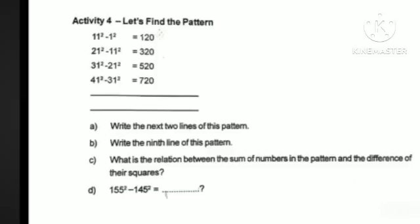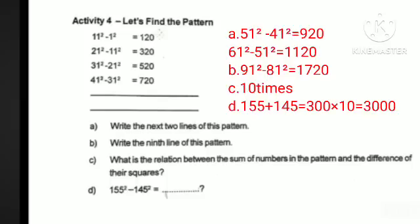Are you ready? Now write the next two lines of this pattern. We will write the next line of this pattern. This pattern is on the 9th line; we will write the next 2 lines with the same format. 91 squared minus 81 squared is equal to 520. This pattern continues in the 9th line.